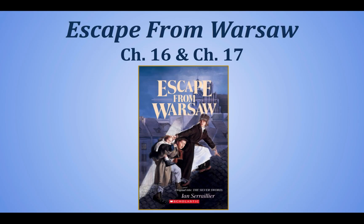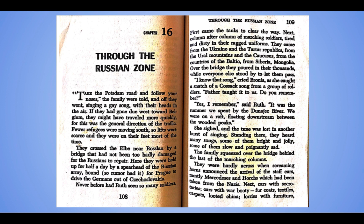Now I'm going to read chapter 16 and 17. Chapter 16 is called Through the Russian Zone. Take the Potsdam Road and follow your noses, the family were told, and off they went singing a gay song with their heads in the air. If they had gone due west towards Belgium, they might have traveled more quickly, for this was the general direction of the traffic. Fewer refugees were moving south, so lifts were scarce and they were on their feet most of the time. They crossed the Elba — that's a river — near Roslau by a bridge that had not been too badly damaged for the Russians to repair. Here they were held up for a day by a spearhead of the Russian army bound, so rumor had it, for Prague to drive the Germans out of Czechoslovakia.